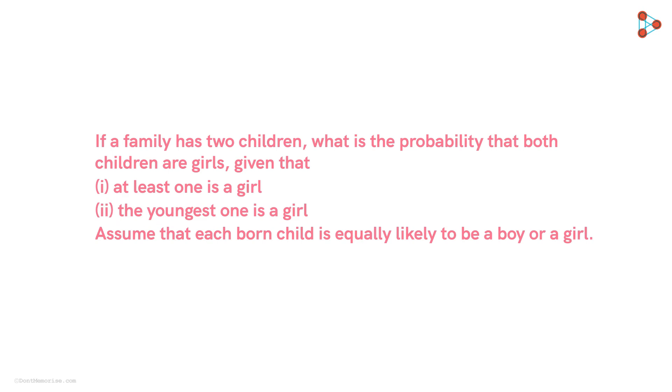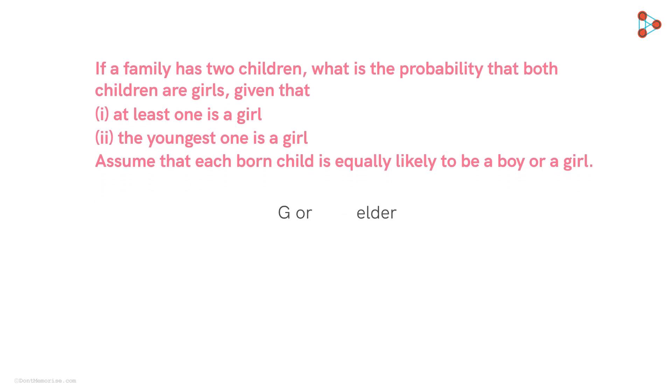First, we will write down the sample space. We will represent the elder child with a capital letter and the younger one with a small letter. There can be a total of four possibilities.